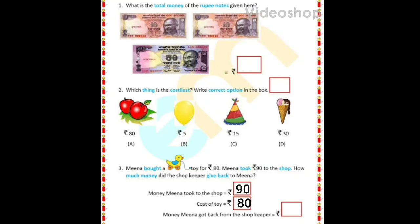Let's do a fun activity. In question one, we have three currency notes: rupees 10, rupees 10, and rupees 50. What is the total amount of money? Rupees 50 plus 10 is rupees 60, plus 10 is rupees 70 in all.